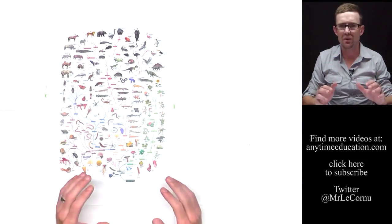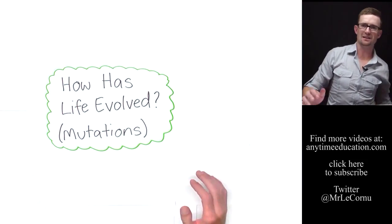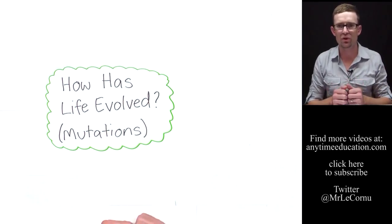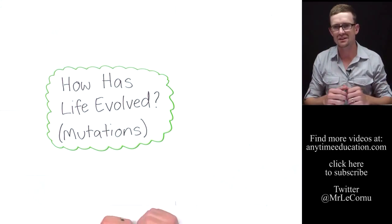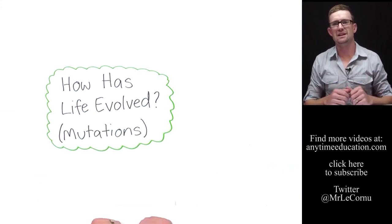The question that I'm going to answer in this video is how has this happened? How has life evolved from a single simple prokaryotic cell to what we see now? It has something to do with mutations. Let's take a look.